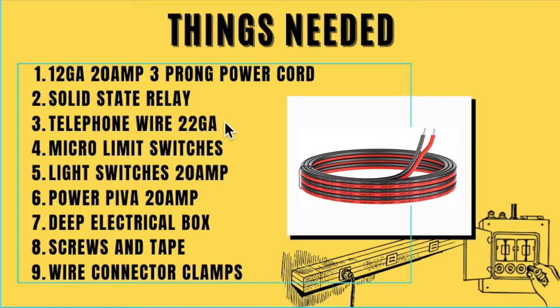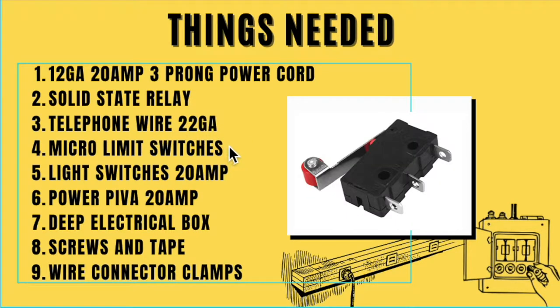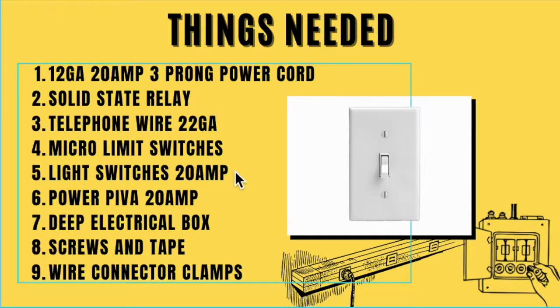Telephone wire, 22 gauge. I bought a hundred feet for like six bucks, but I think you can buy, it just depends on how big your wood shop is. Actually, I take it back. I think I bought 300 feet for six bucks. And just depending on how big your wood shop is, that's going to determine how much telephone wire you're going to need. Micro limit switches. You can also find these on Amazon. Just type in micro limit switch and we'll get to what those look like in a little bit. Light switch. You're actually only going to need one and it's going to need to be a 20 amp.